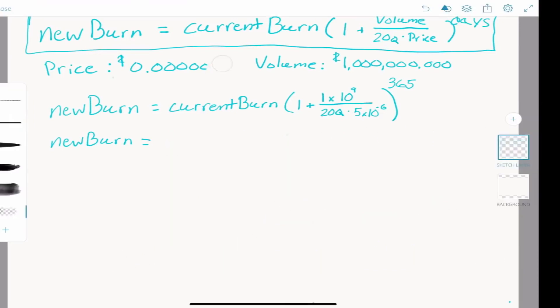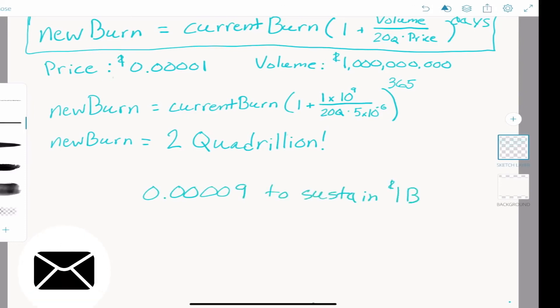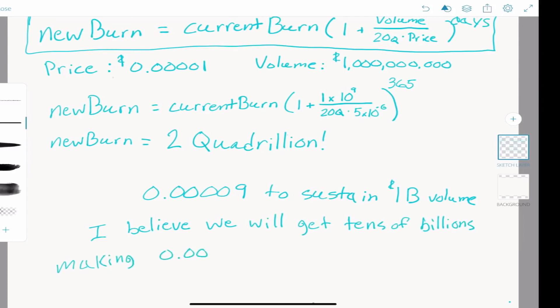Even if we plug in $1 billion per day when the price is 0.0001, that's still over 2 quadrillion burnt. That price is still not high enough. If we're going to sustain even $1 billion of daily volume, our price needs to rise as high as at least 0.0009, or 18x what it is right now. Personally, I believe SafeMoon will see volumes in the tens of billions, and the math says if volume picks up, the price must increase.